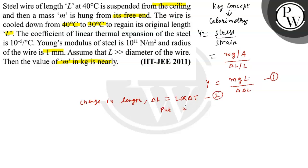Put equation 2 in 1 and we get Y equals mgL divided by A·L·α·ΔT. So after calculation we got m equals Y·A·α·ΔT divided by g.